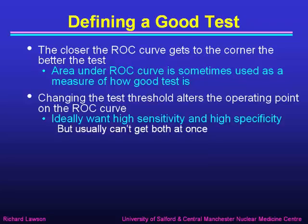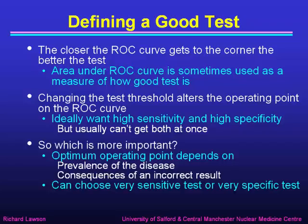Changing the test threshold alters the operating point, and ideally we want to be close to the top left-hand corner with high sensitivity and high specificity, but usually we can't get both at once, so we have to compromise. The optimum operating point depends on several things: the prevalence of the disease in the population, as well as the consequences of an incorrect result — which is worse, failing to detect the disease or incorrectly saying that it's present.